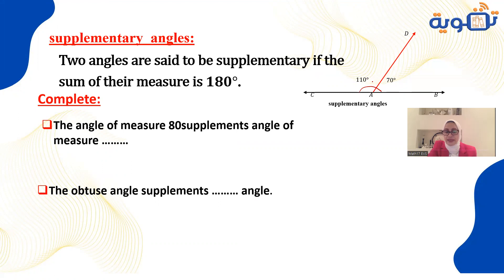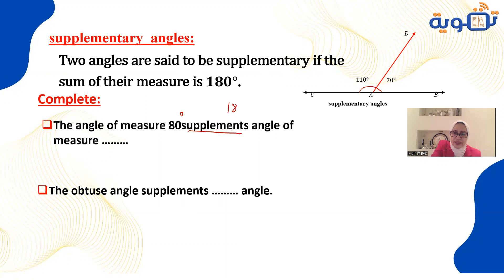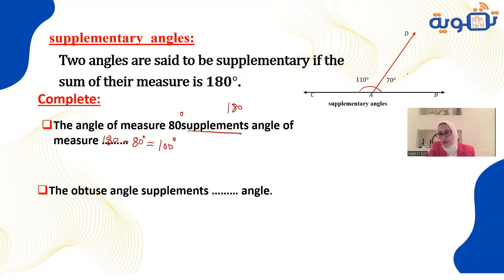For the angle whose measure is 80 degrees, find its supplement. When you see the word 'supplement,' write 180. Then calculate 180 minus 80, which gives 100 degrees. Notice that 80 degrees is an acute angle and its supplement, 100 degrees, is an obtuse angle.